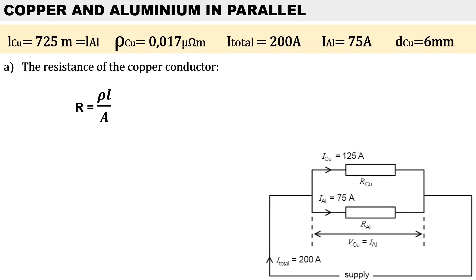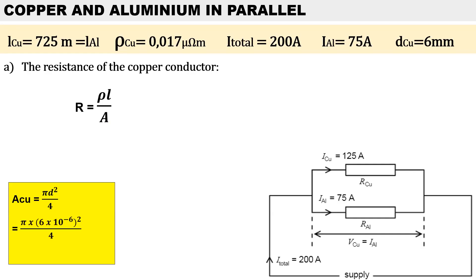To calculate the resistance of the copper conductor, we first have to determine the area since we only have the diameter. To calculate the area, it is pi d squared over 4. We need to convert millimeters into meters squared by multiplying by 10 to the power of minus 6. So it is pi multiplied by 6 millimeters times 10 to the power of minus 6 — don't forget to square the diameter — divided by 4. Therefore, the area of the copper conductor will be 2.287 times 10 to the minus 5 meters squared.